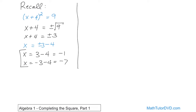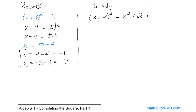Let's study this problem. What we started with on the left was x plus 4 squared. Let's expand it out. If you have a binomial squared, you can write it as x plus 4 times x plus 4 and use FOIL — first, inside, outside, last — or just use the shortcut. Since it's a binomial squared, it's the first term squared, x squared, plus 2 times the first term times the second term — that's 2 times x times 4 — plus the last term squared, 4 squared. That gives us x squared plus 8x plus 16.